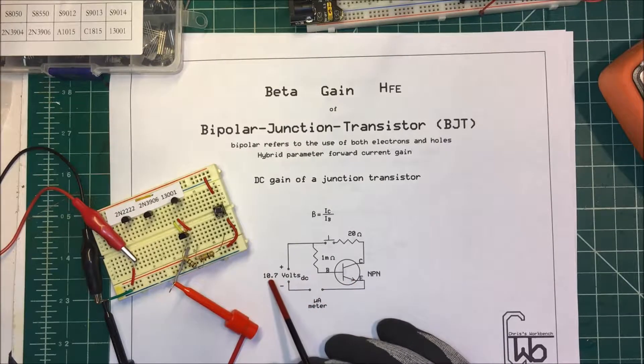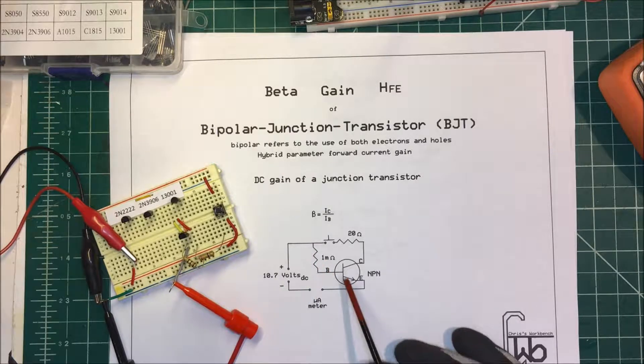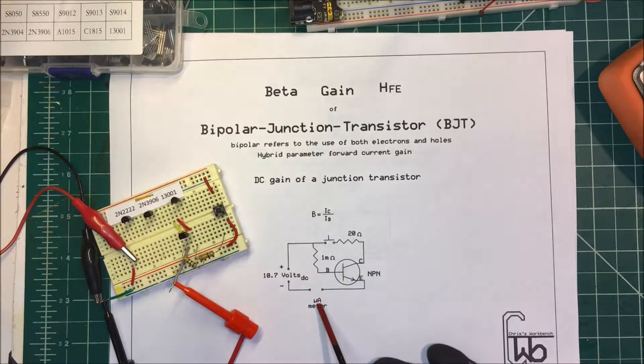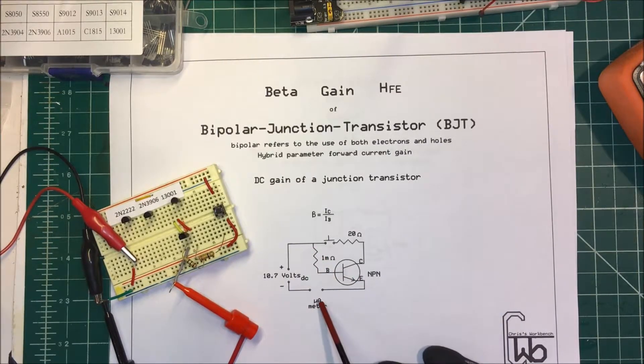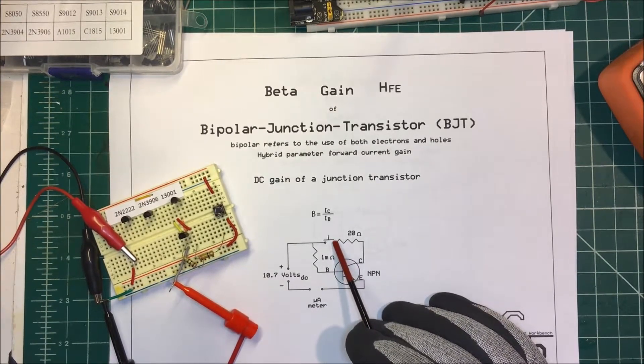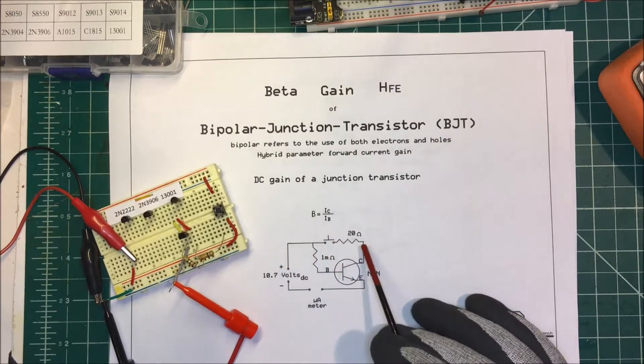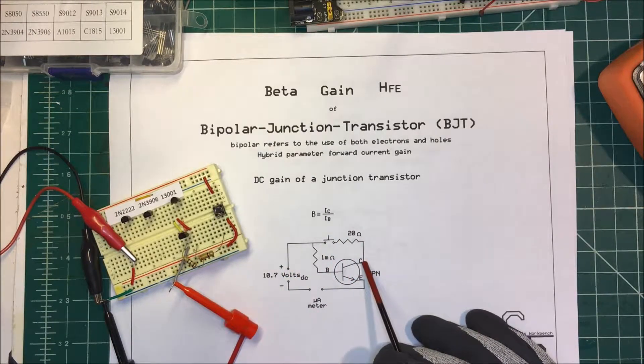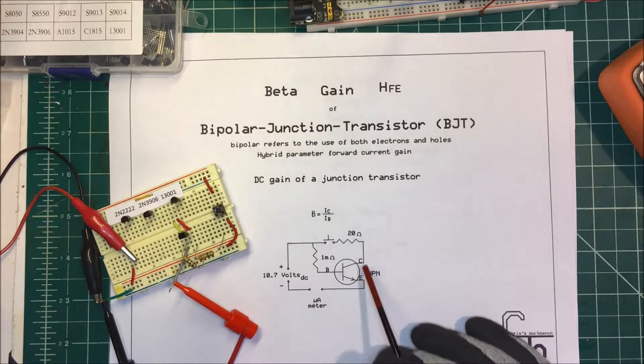But I'm dropping 0.7 volts across this junction here, so I'm going to put in 10.7 volts into this unit, and that should give me my 10 microamps through the emitter. Then I'm going to press this switch down here and put voltage into the collector.